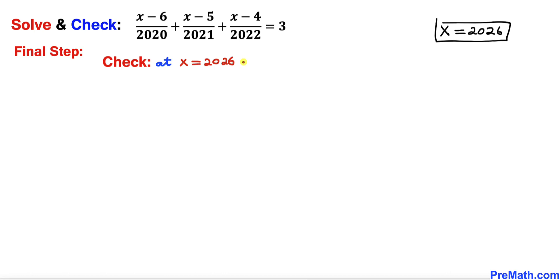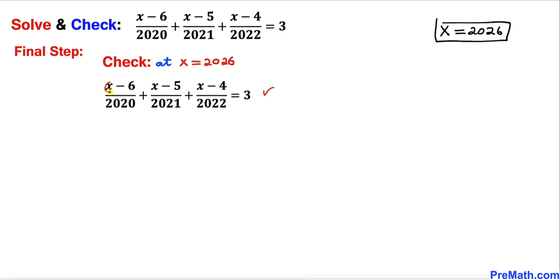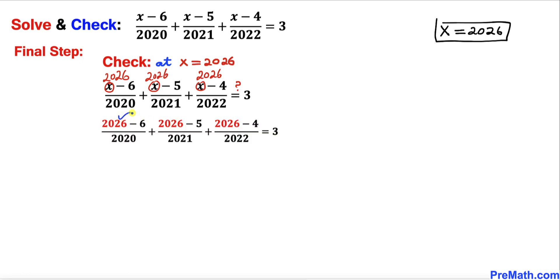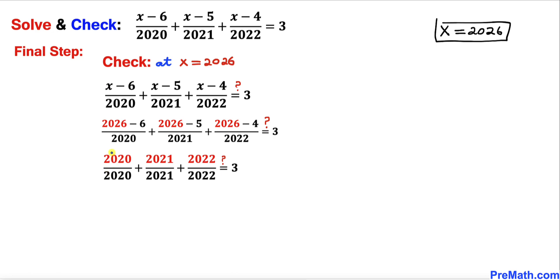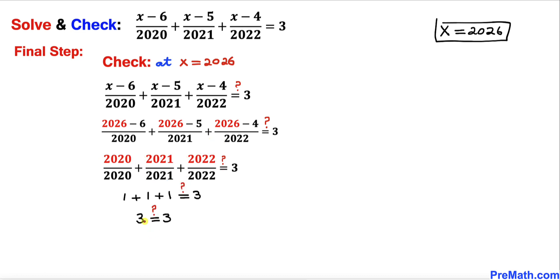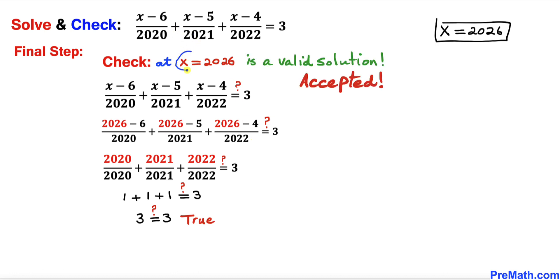Here's our final step: let's check our solution for x equal to 2026. Starting from our original equation, we replace each x with 2026. We can see that (2026 minus 6) divided by 2020 equals 2020 over 2020, which is 1. Likewise the second fraction equals 1, and the third fraction equals 1 as well. The left hand side turns out to be 3, which equals the right hand side of 3. This is indeed a true statement, so x equals 2026 is a valid solution and we accept it.